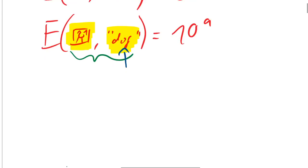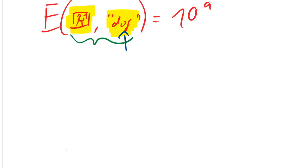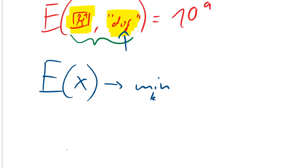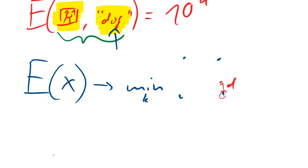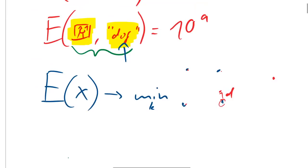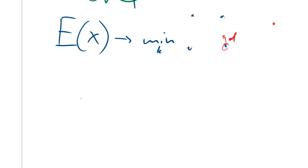Another example: say you have a k-means model, and the energy function takes a data point as input. You find the closest cluster, and the distance d to that cluster is the energy. The model is very happy when your data point comes from one of the clusters, but unhappy when the data point is far away. That's the cost function of k-means — so that's an energy-based model too.